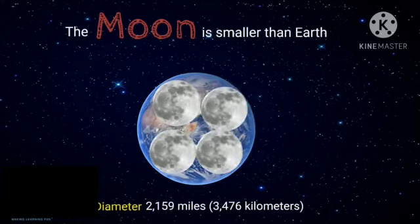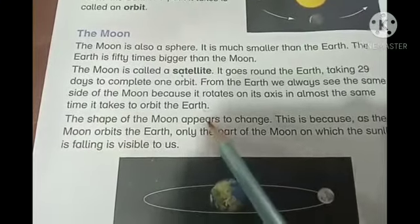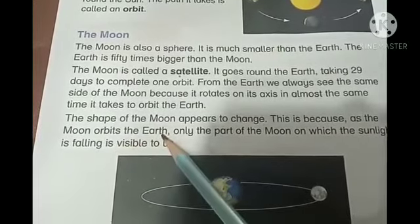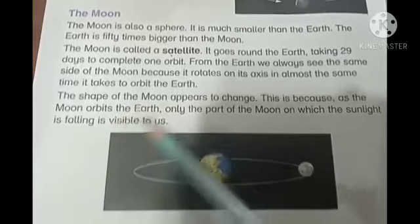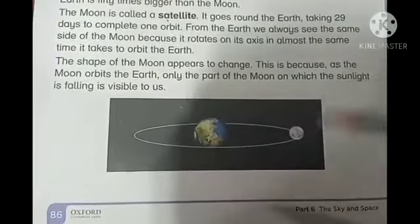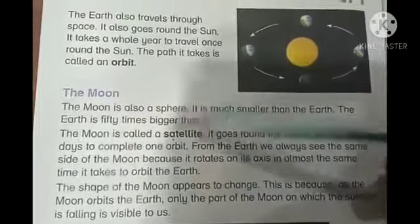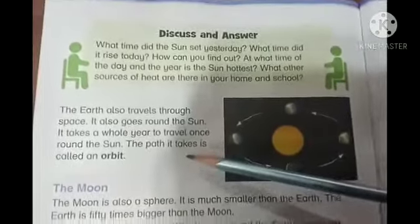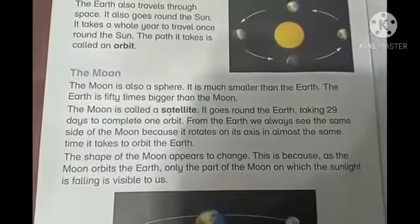That means the moon would fit inside the Earth four times. The shape of the moon appears to change — this is because as the moon orbits the Earth, only the part of the moon on which sunlight is falling is visible to us. I hope you have enjoyed learning about different facts about the moon as well as Earth. Now read page number 86 and get ready for your assessment. Thank you.